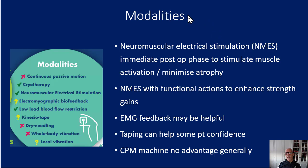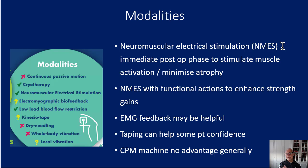Many of the modalities are not essential, but they could be used more in the early phases for pain reduction and reduction of swelling. If we can hand the responsibility for those over to the patient, so much better because we're building self-efficacy. Something like a TENS machine that we can loan them, or an ice pack that they can apply themselves, is quite useful. Neuromuscular electrical stimulation can be useful where the muscle isn't contracting voluntarily. EMG feedback might be useful if we have access, but they're not essential.